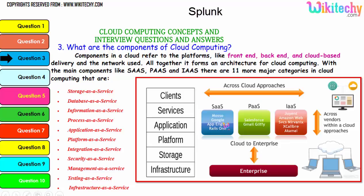For Software as a Service, examples include App Engine, Google, and Azure. For Platform as a Service, examples include Gmail, Glyphi, and Salesforce. For Infrastructure as a Service, you have companies like Amazon Web Services.